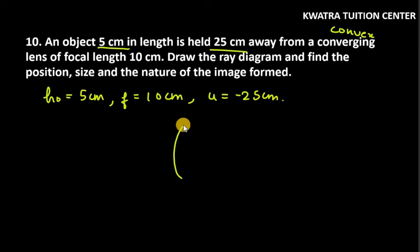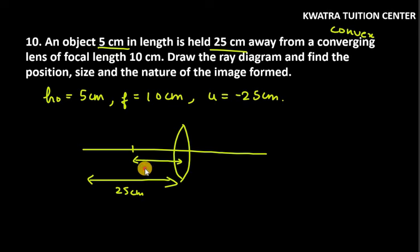First of all, we make a diagram so that we can see how it will be seen and where it will be seen. Here we have to call that it is 25 cm. Let it be F1 and our position object is 25cm. We take AB.